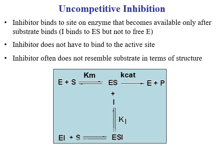For uncompetitive inhibition, this type of inhibitor only binds to the enzyme that has already bound to the substrate — it binds to the enzyme-substrate complex, but not to the free enzyme. This type of inhibitor does not necessarily bind to the active site of the enzyme. Furthermore, this inhibitor often does not resemble the substrate in terms of structure.